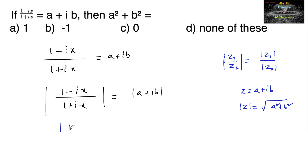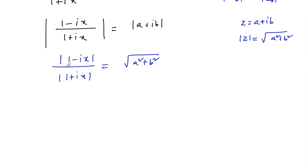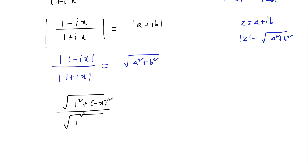We can write: modulus of (1 - ix) upon modulus of (1 + ix) equals root over a square plus b square. So we get root over (1 square plus x square) upon root over (1 square plus x square), which equals root over a square plus b square.